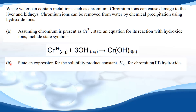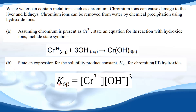Part B: state an expression for the solubility product constant for chromium hydroxide. Ksp equals the concentration of the chromium ions multiplied by the concentration of the hydroxide ions raised to the power 3. The reason we raise it to the power 3 is because the coefficient in front of the hydroxide ions is 3.